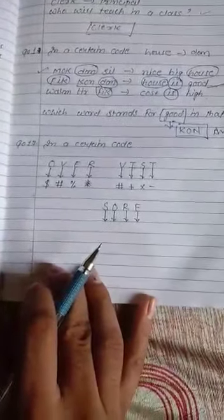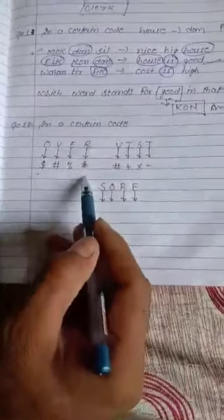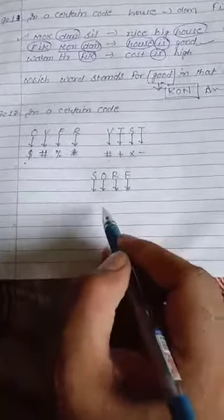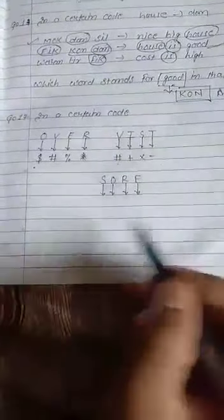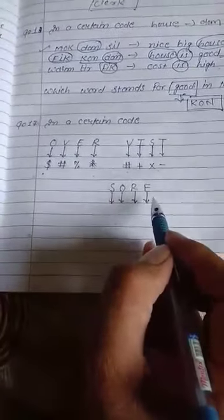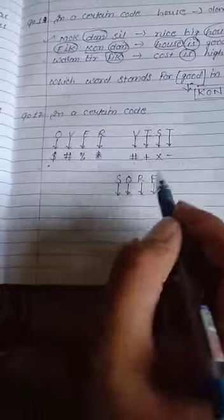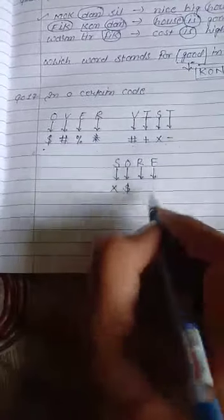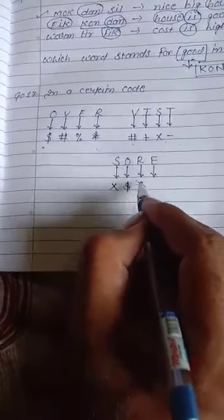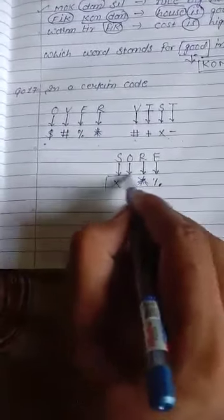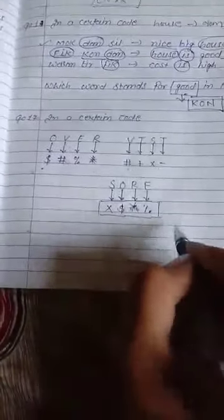Now come to the next question. It is also quite easy question. In a certain code, OR is written with this particular symbol. VIST is written with this particular symbol. And we have to say what will be the coded form for SORE. So we just take the coded form which is already mentioned in the question for the given alphabets and we will use it. For S, it is cross. For O, it is dollar. For R, it is star, something like that. For E, it is symbol of percentage. So this will be the answer for given question.